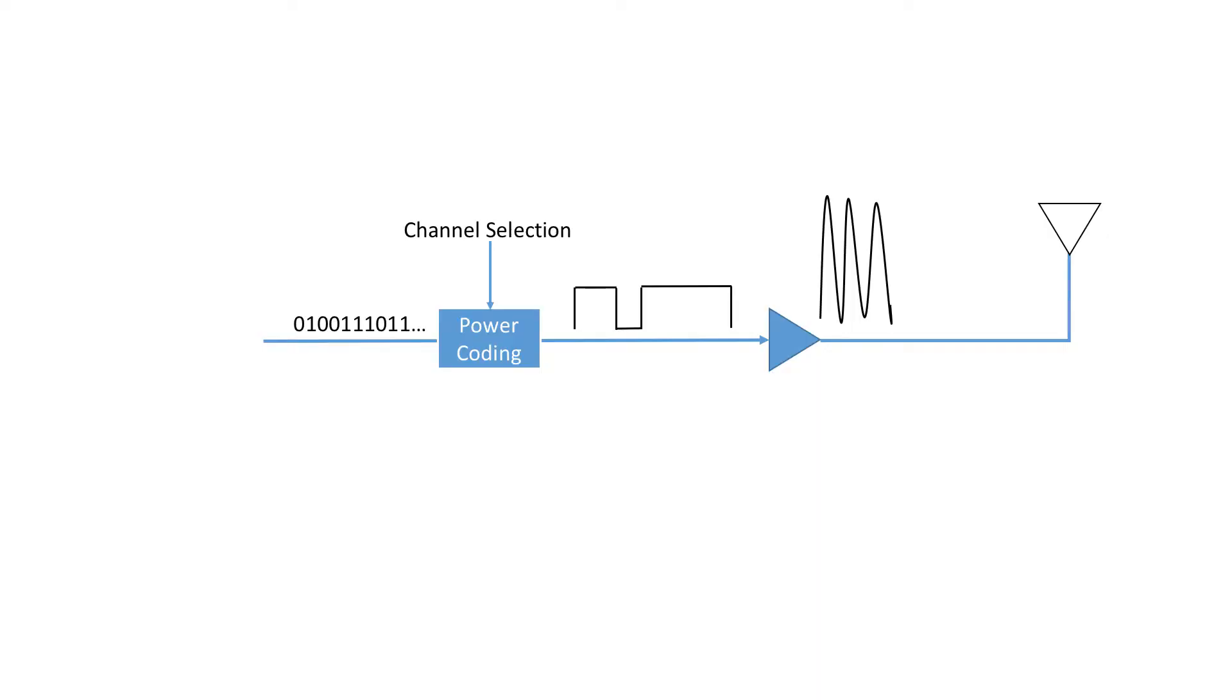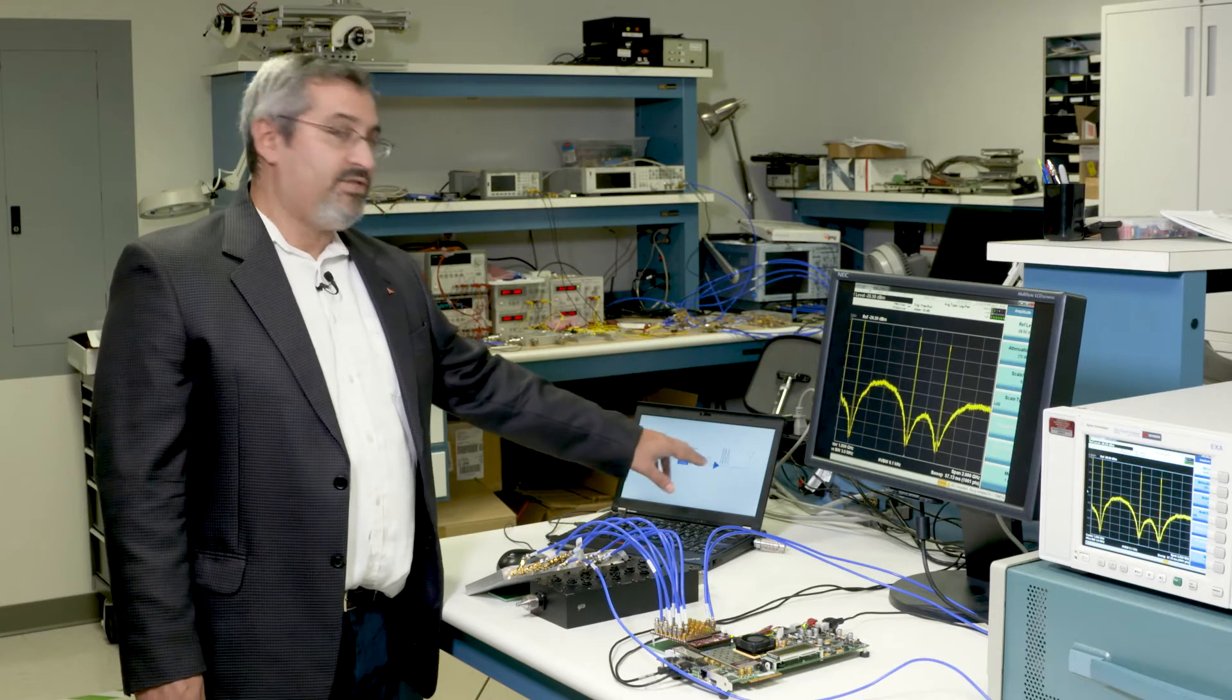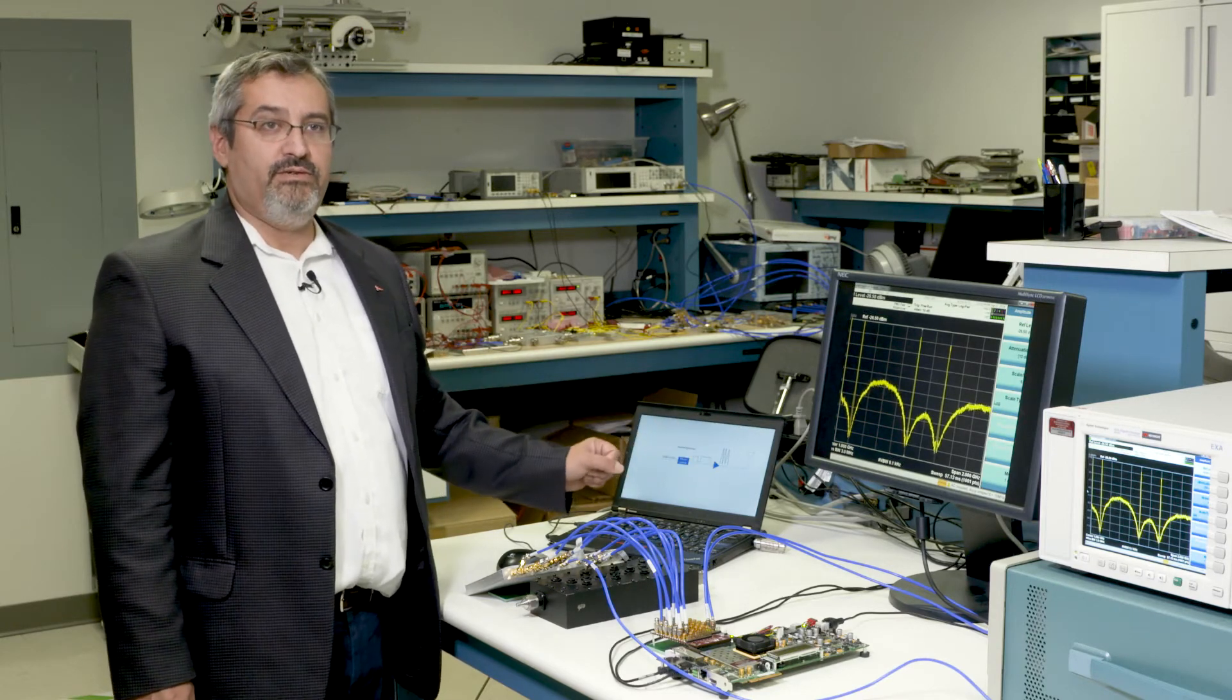So what we do in an all digital transmitter is we take our bit stream and we use a device from Mitsubishi Electric called a switched mode power amplifier based on gallium nitride technology. And from our bit stream we directly compute a control sequence that turns the power amplifier on and off. This sequence is computed so that we get at the output of the power amplifier the desired radio frequency signal.